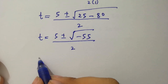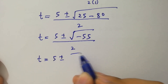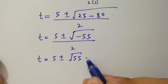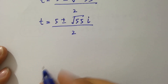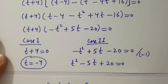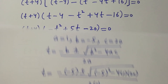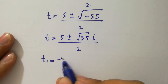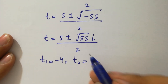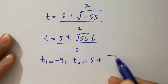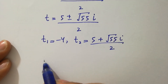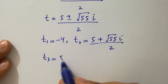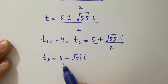So t equals 5 plus or minus square root of 55 times i, over 2, since the square root of negative 1 is i. This gives our complex solutions. We have three solutions total: t₁ equals negative 4 (the real solution), t₂ equals 5 plus square root of 55 times i, over 2, and t₃ equals 5 minus square root of 55 times i, over 2.